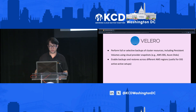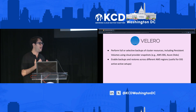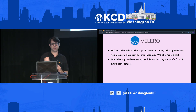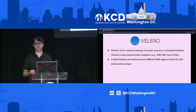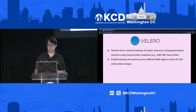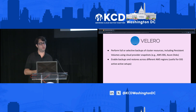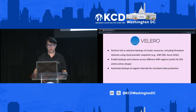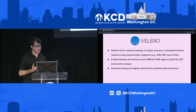Velero also really helps with disaster recovery. If we don't have an active-active DR strategy, we can use this backup, put it in an S3 bucket, and then use the Velero CLI to restore it in our destination DR cluster. It also supports automatic backups at regular intervals.